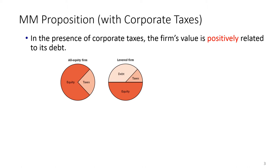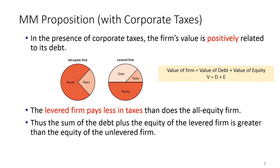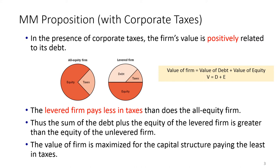The proportion going to taxes is simply a cost. The pie on the right for the levered firm shows three claims: equity holders, debt holders, and taxes by government. Recall that the value of firm is the sum of the value of debt and equity. The levered firm pays less in taxes than the all-equity firm, so the sum of debt plus equity of the levered firm is greater than the equity of the unlevered firm. The value of firm is maximized for the capital structure paying the least in taxes.